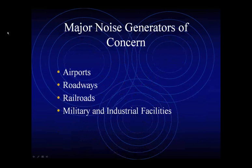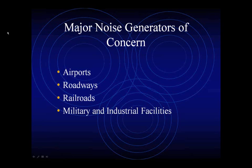The major noise concerns, for the most part, are transportation sources — they're the most common in the urban environment. Airports, railways, and highways are the major noise sources in the urban environments where HUD-assisted projects exist. The fourth category — military and industrial facilities — deals with loud impulsive sounds, which we're going to talk about a little bit later.